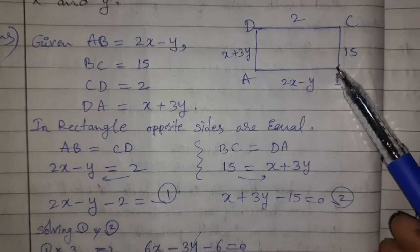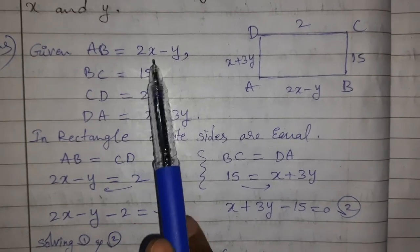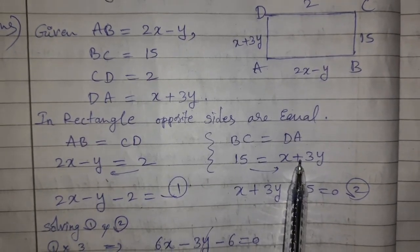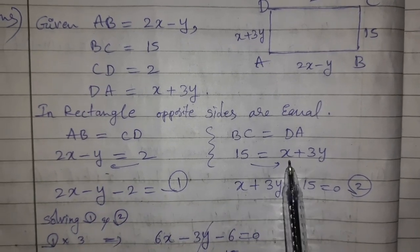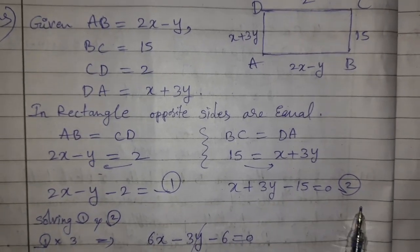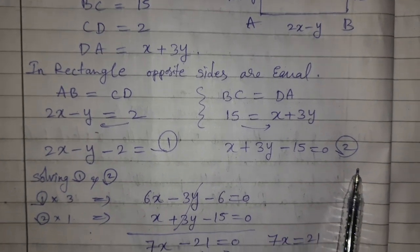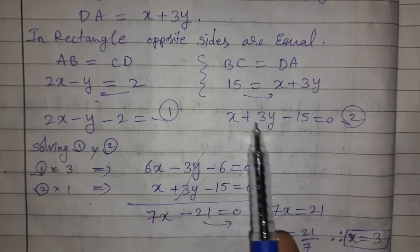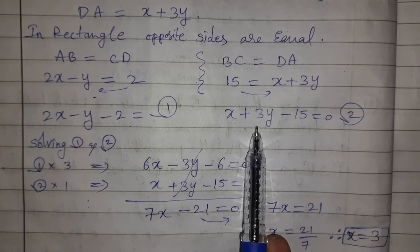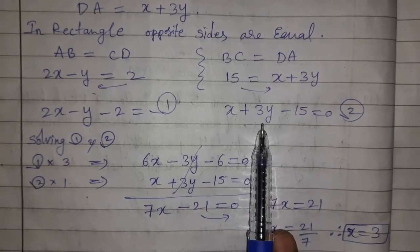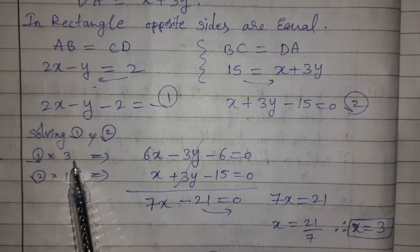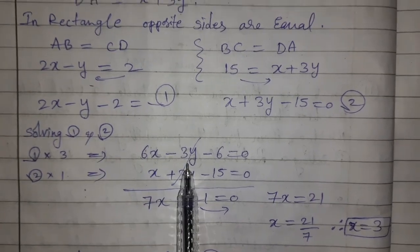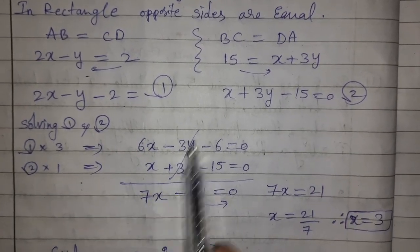First case AB = CD: 2x − y = x + 2, rearranging gives equation 1. Second case BC = DA: 15 = x + 3y, rearranging gives equation 2. To eliminate y, multiply equation 1 by 3 and equation 2 by 1.